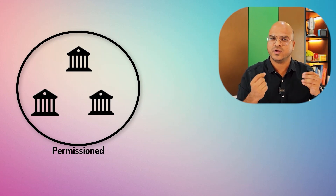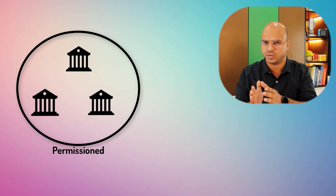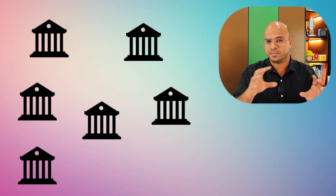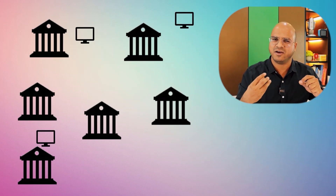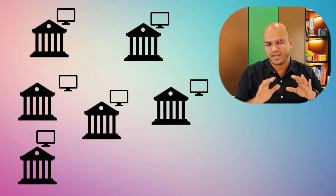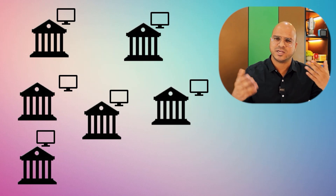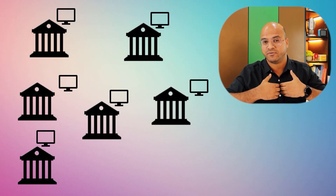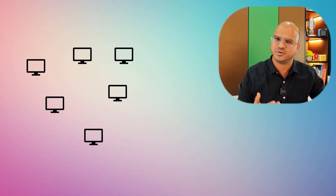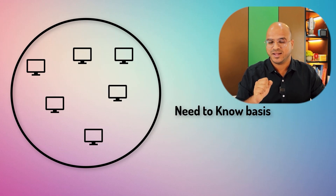The actors in the Corda network are called nodes — one actor, one node. If we have multiple enterprises or companies wanting to be part of this network, they can have multiple nodes. For this example, let's say one node per company, so for three companies we have three nodes. As you expand, if you want a bigger network with more companies interacting, you can do that.